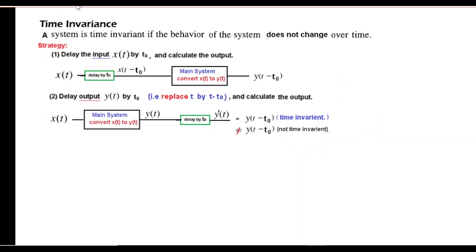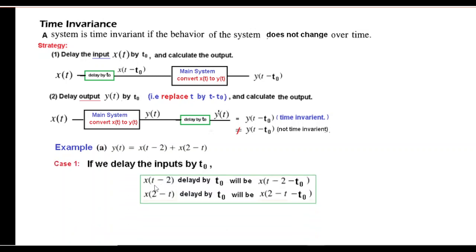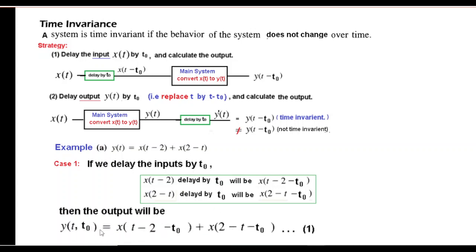I'll not be repeating this definition in all problems, but let's do the first example. First, we delay all x terms by t0: x(t-2) delayed by t0 becomes x(t-2-t0), and similarly the second term x(2-t) also gets delayed by t0. So after delaying, the output for the first case is x(t-2-t0) plus the second delayed input.